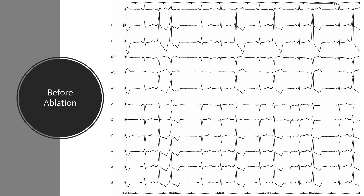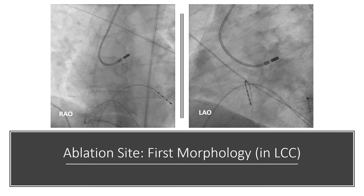In this case, we have two possibilities: either we have two PVCs, or more probably we have one PVC located somewhere between these two structures with an oscillating shift and therefore two morphologies. Because the first morphology was more common than the second one, we decided to use a retrograde axis and map the first morphology. We located the earliest point in the left coronary cusp and successfully ablated the first morphology. However, after ablation of the first morphology, frequent PVC persisted with the second morphology, so we decided to go below the coronary cusp and map the second morphology.